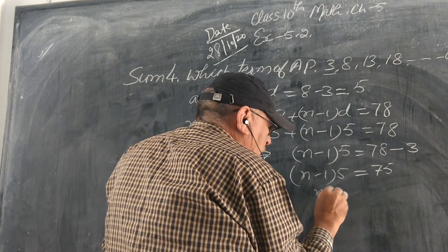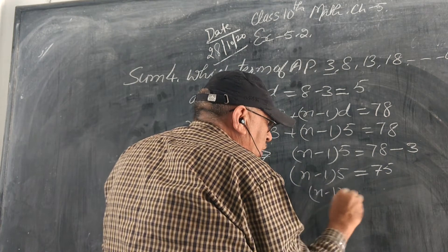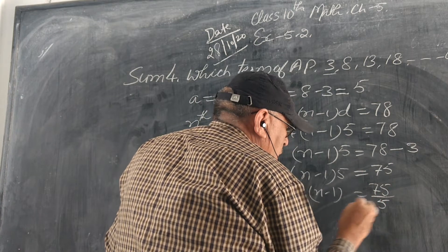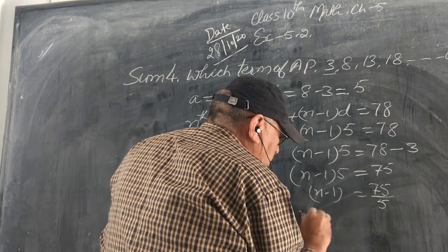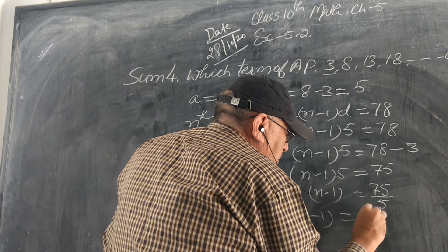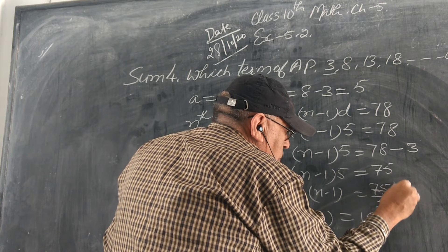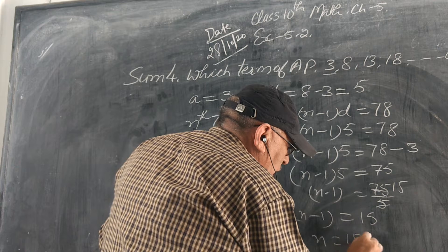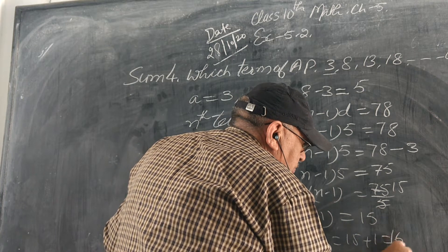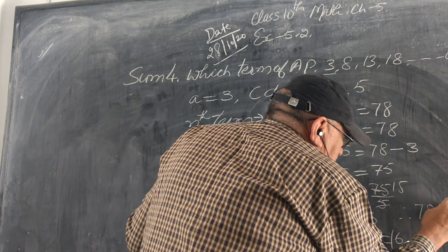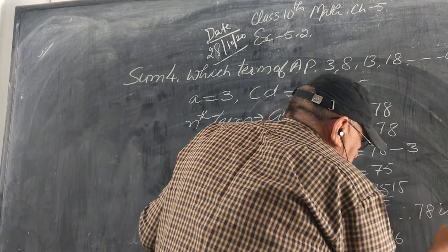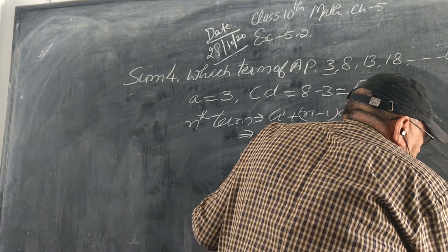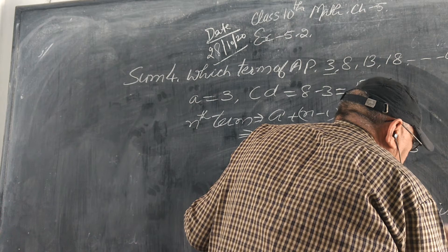So n minus 1 equals 75 divided by 5, which is 15. Therefore, n equals 15 plus 1, which equals 16. Therefore, 78 is the 16th term of that AP.